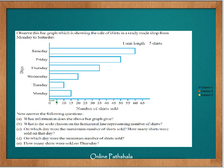One unit length covers 0 to 5 shirts. On which day were the maximum number of shirts sold? On Saturday, the maximum number of shirts were sold. How many shirts were sold on that day? The bar for Saturday is coinciding with the number 60 on the x-axis, so 60 shirts were sold on Saturday.